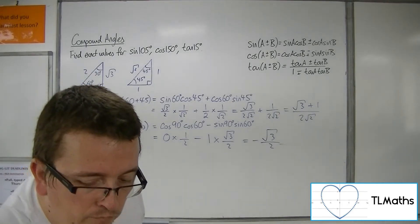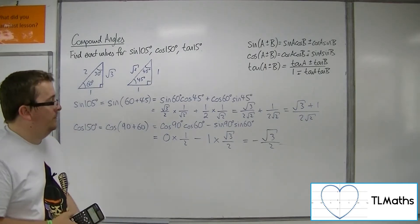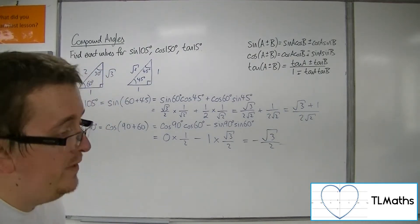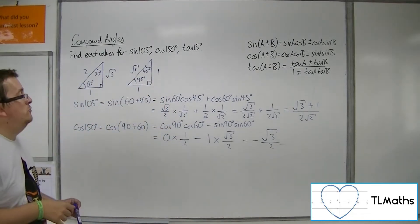Checking on your calculator, cos of 150, minus root 3 over 2. If your calculator is giving you a decimal value, you can always type minus root 3 over 2 to check you've got the same result.